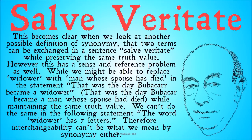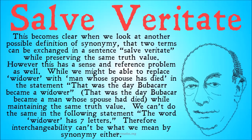This becomes clear when we look at another possible definition of synonymy: that two terms can be exchanged in a sentence salva veritate — saving truth value while preserving the same truth value. If it was true before, it should be true after; if false before, false after. However, this has a sense and reference problem as well. We might be able to replace 'widower' with 'man whose spouse has died' in the statement 'that was the day Boubacar became a widower' — 'that was the day Boubacar became a man whose spouse had died' should have the same truth value. While maintaining the same truth value, we can't do the same for: 'the word widower has seven letters'. Therefore, interchangeability can't be what we mean by synonymy either.